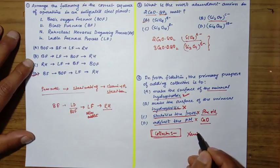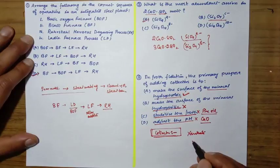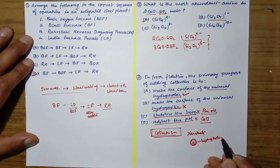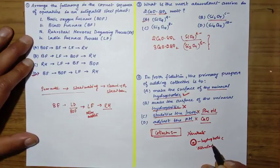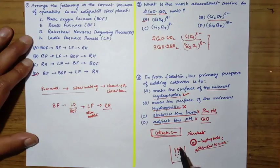Collector is basically xanthate. It covers the mineral particle and forms a surface that is hydrophobic, so it's not attracted to water. That's why it gets attached to the bubble. When these bubbles rise, they carry the mineral particles to the top and we get the mineral on top.